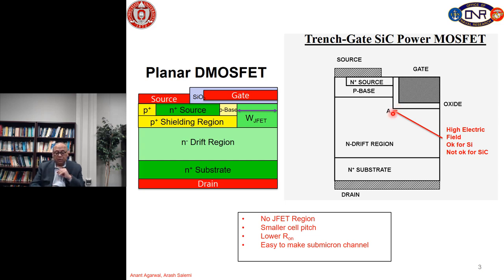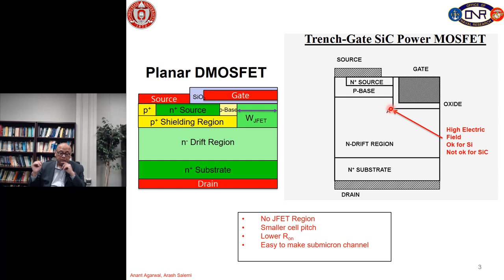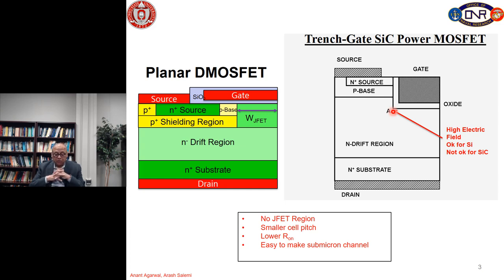But in silicon carbide, if we use 2 megavolt per centimeter, the field in the oxide would be 6 megavolt per centimeter, which is very unreliable for gate oxide. So in silicon carbide design, we have to reduce the electric field at this corner, and over the years many designs have come up which we'll discuss.